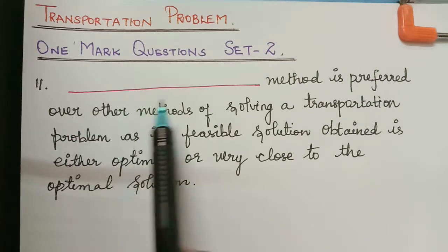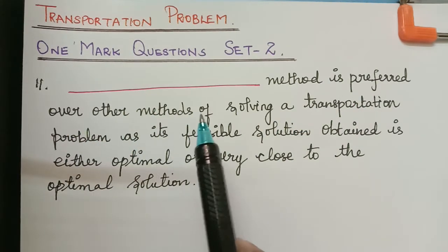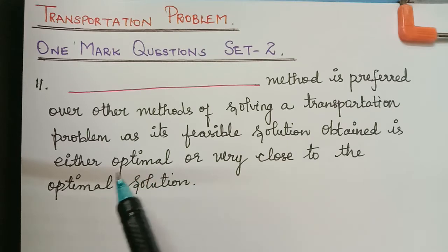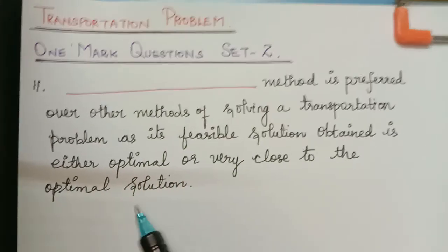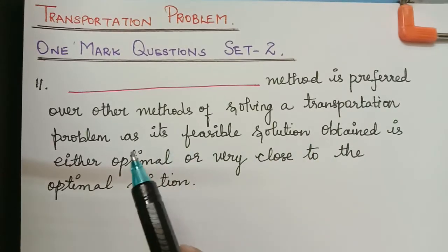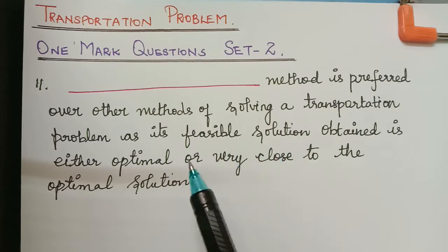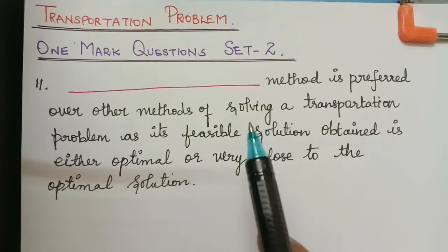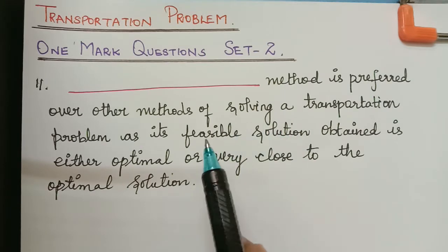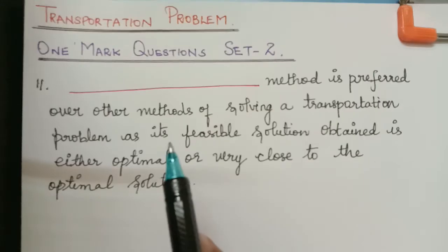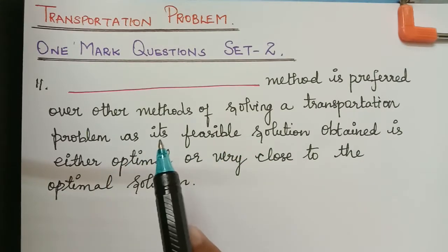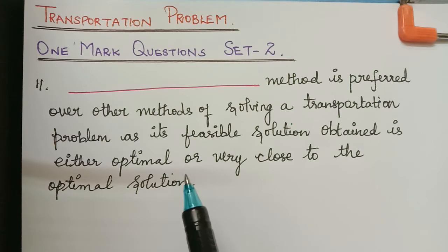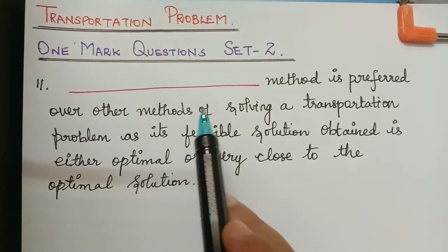The next question is: which method is preferred over other methods of solving a transportation problem as its feasible solution obtained is either optimal or very close to the optimal solution? In solving a transportation problem we have various methods: northwest corner rule, least cost entry method, row minima method, column minima method, and Vogel's approximation method. Out of all these, Vogel's approximation method is preferred because its feasible solution will be either optimal or very close to the optimal solution. So the answer is Vogel's approximation method.